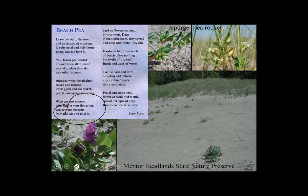'Hard as November wind in your roots. Deep in the sterile loam, they spread and keep what water they can. Hard scrabble. This stretch of beach offers nothing but swells of dry turf. Break and wash of waves, like the back and forth of xylem and phloem' — vascular tissue — 'and your thin frame's tiny musculature. Pastel and crepe petal. Flower of work and metal.' Nice rhyme. 'Spread out. Spread deep. Bow to no one. To no rose.' A little poem about beach pea — and here's the beach pea at the Headlands Dunes State Nature Preserve, and here's the spurge, here's the sea rocket. Nice poem.